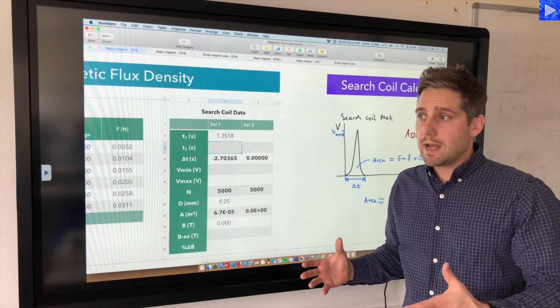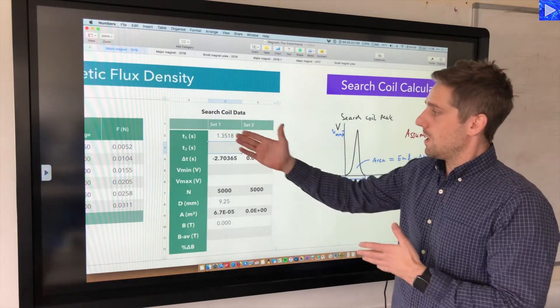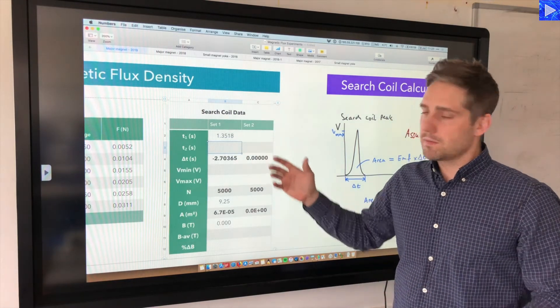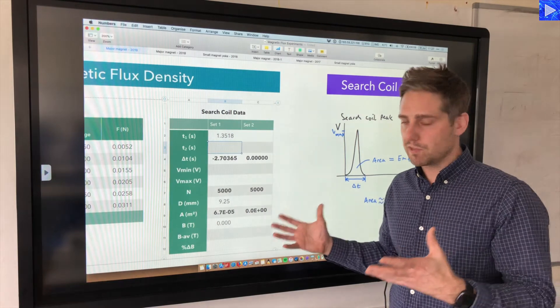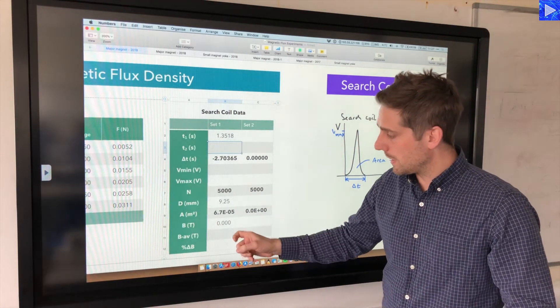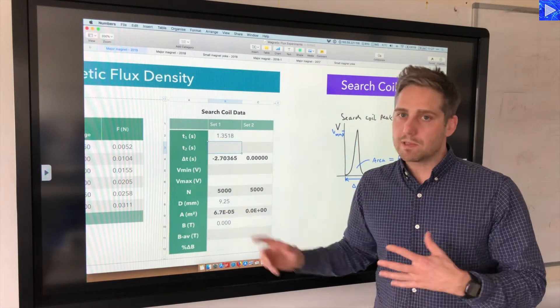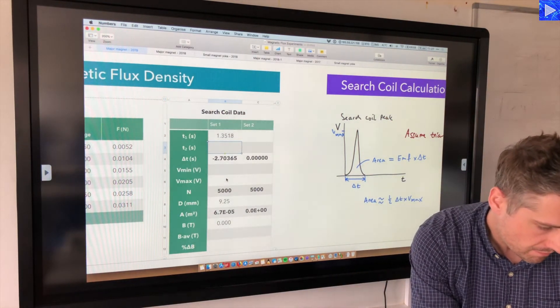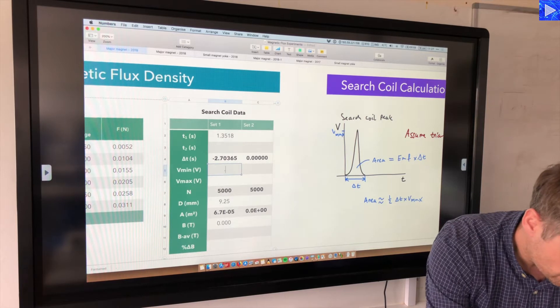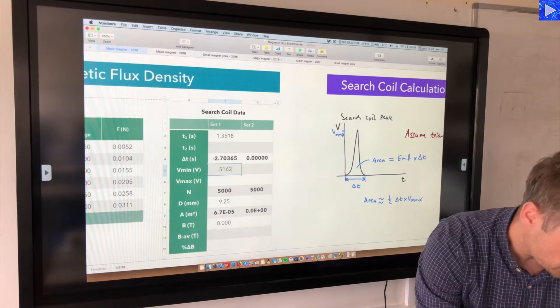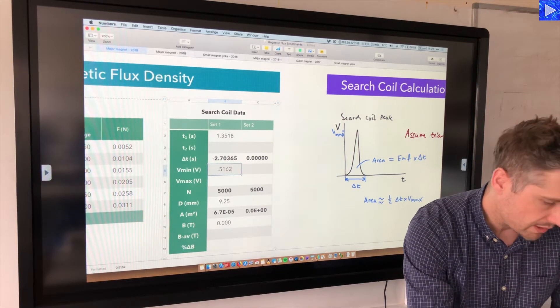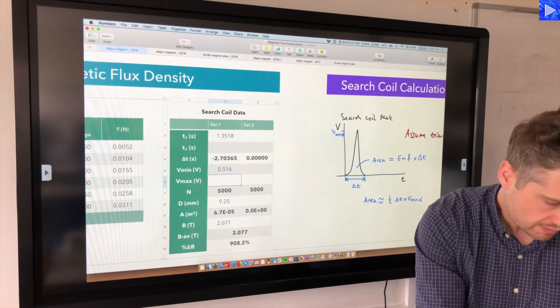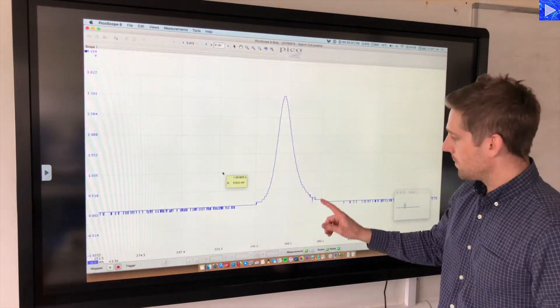I'm going to switch over to my spreadsheet and put those data in. So T1 was 1.351825. There's obviously a great deal of precision in that, and I'm not obviously going to assume that I've got that high precision value for my final output because the diameter is going to be a real limit here.